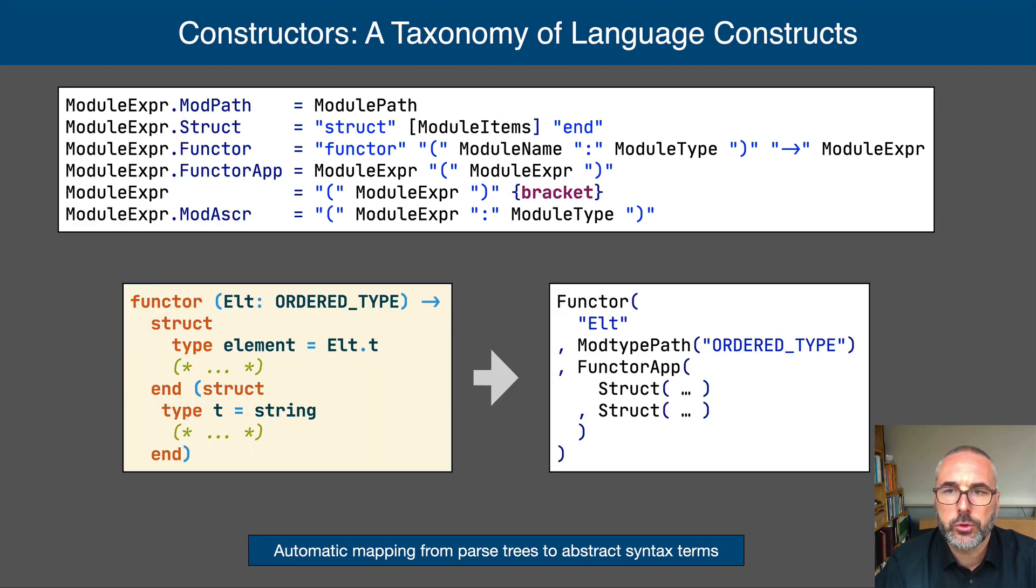Next, we assign names to language constructs using production constructors. These are useful to talk about the elements of programs, both when programming and when metaprogramming, for example, when developing a type checker.